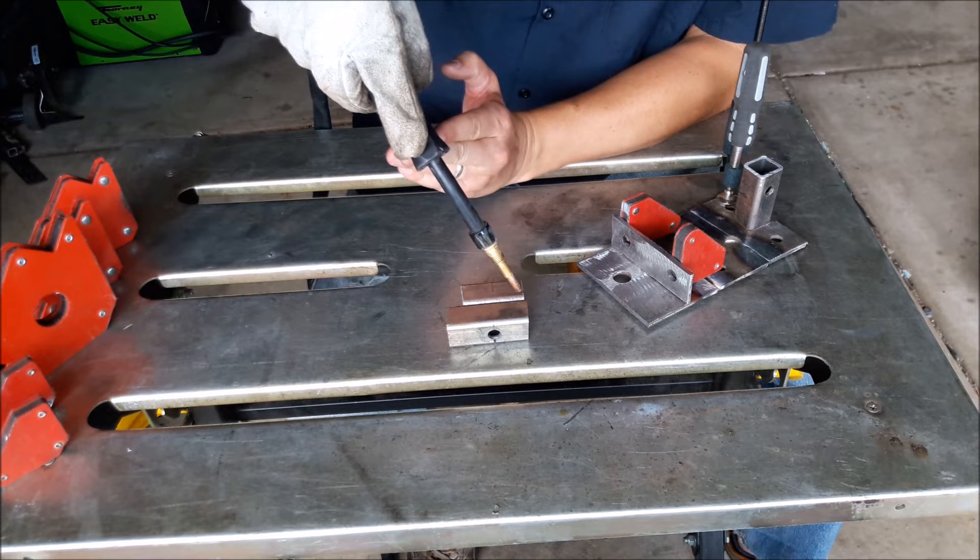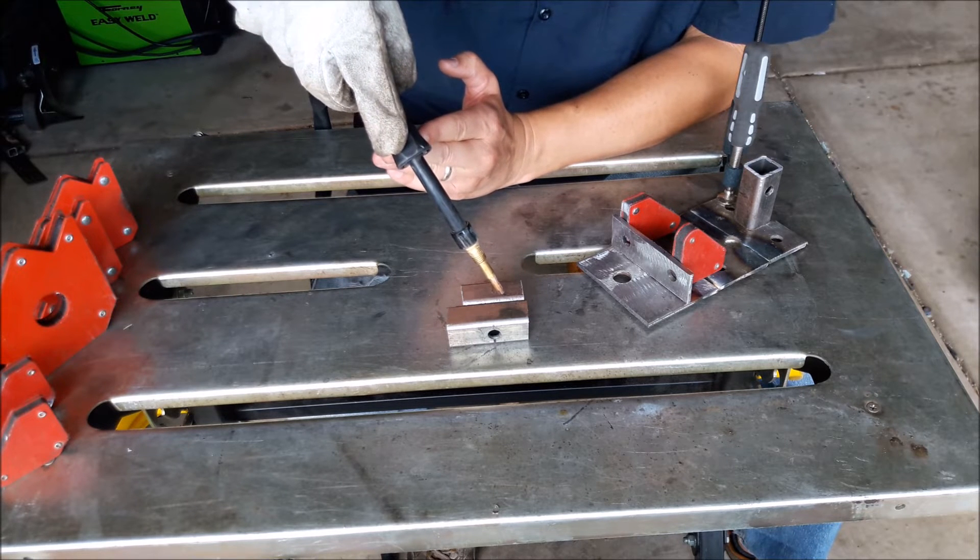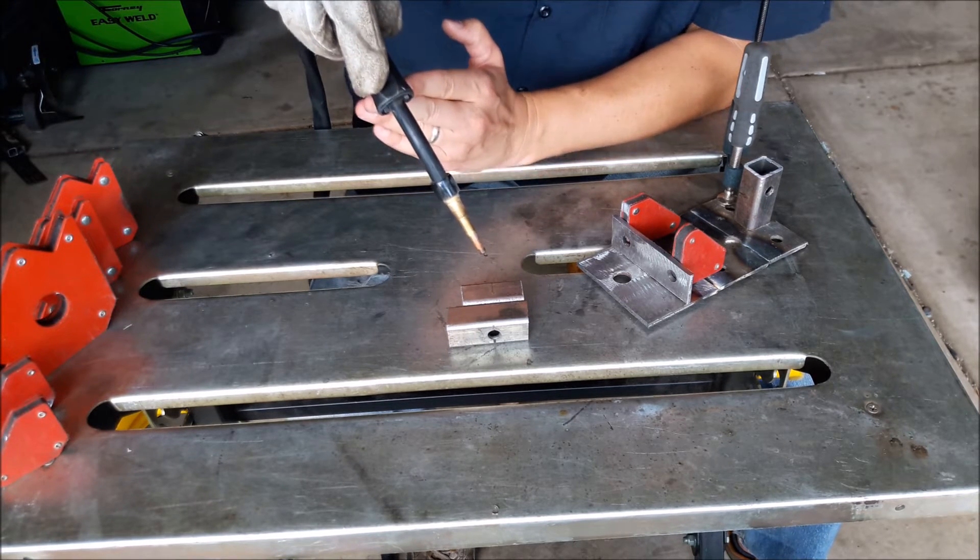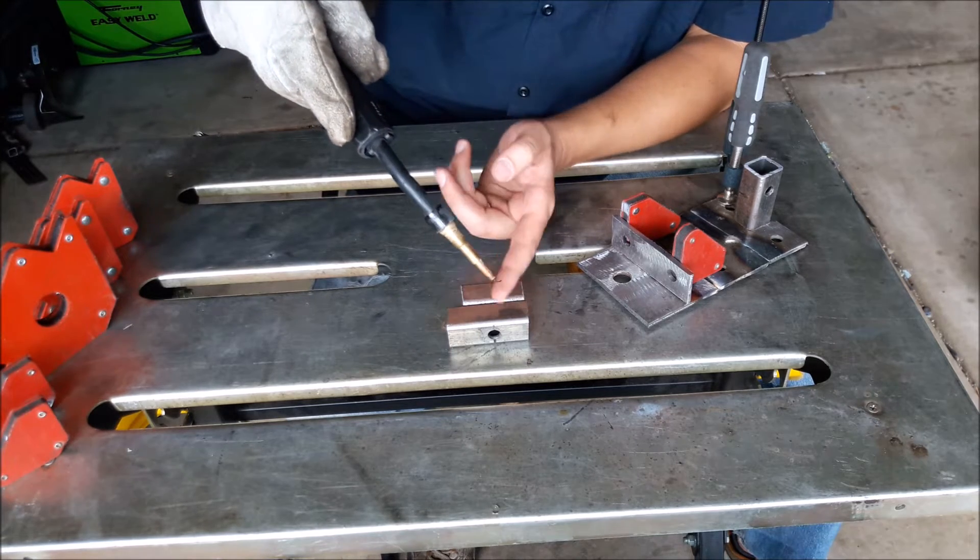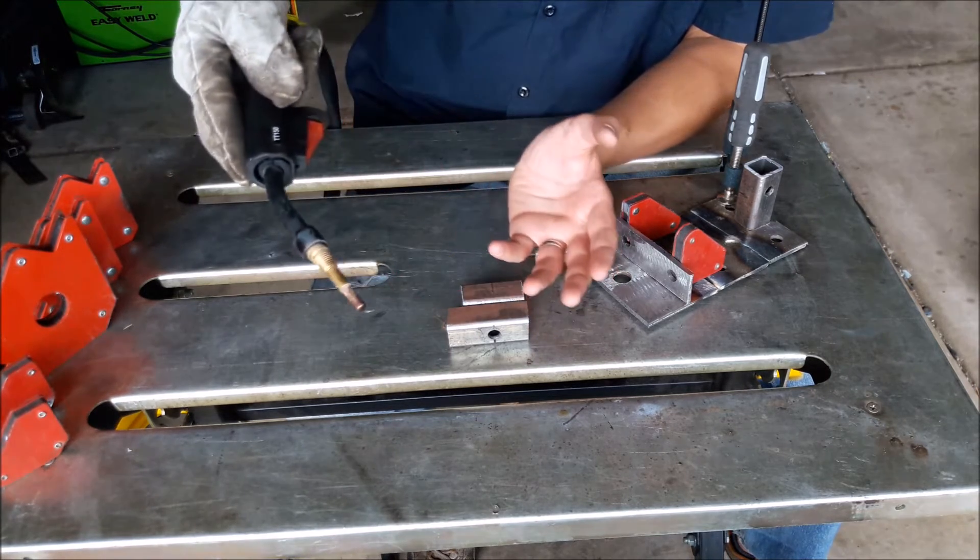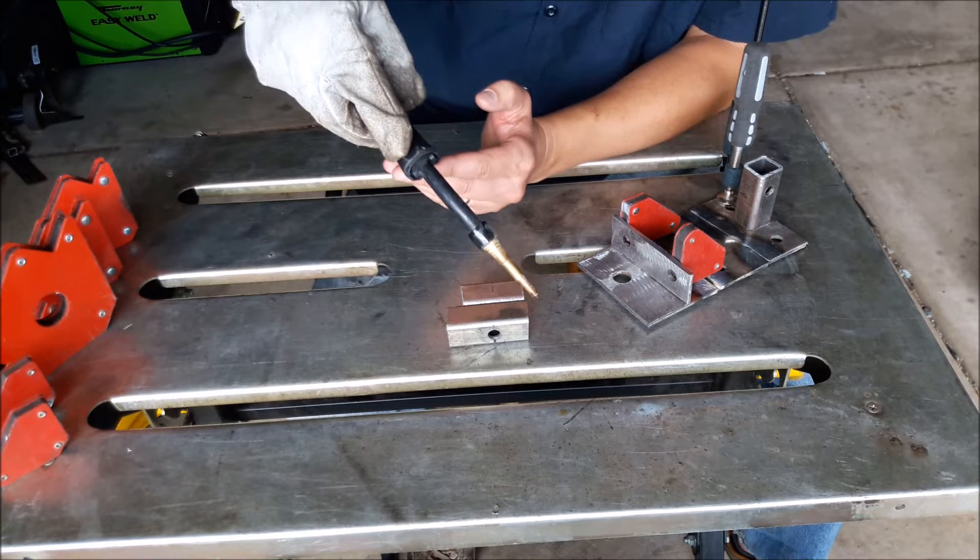But so anyway, you're going to drag it the angle you want. Second thing, you don't want to be too far away and you don't want to be too close. If you're too close then your tip is going to hit the metal and then it will arc out and cause you grief.